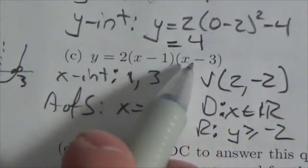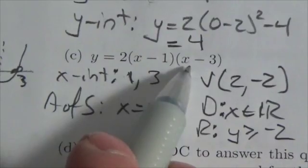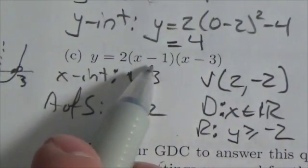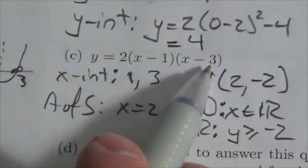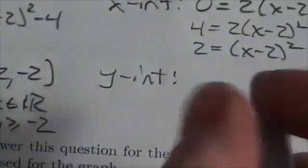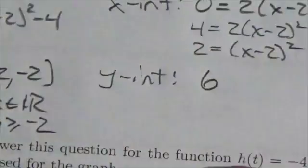So 0 minus 1 is negative 1. 0 minus 3 is negative 3. So 2 times negative 1 is negative 2. Times negative 3 is positive 6. So my y-intercept here is positive 6.